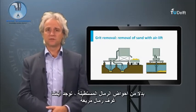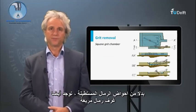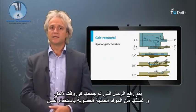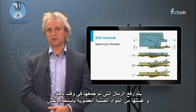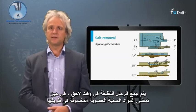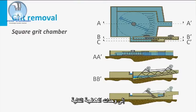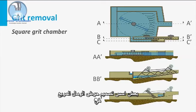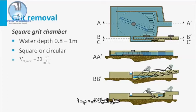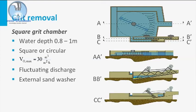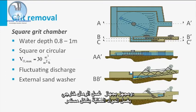Instead of rectangular grit chambers, square grit chambers are also applied. In this design, the sand is moved to one lateral side by a slowly moving hopper. The collected sand is subsequently lifted and washed from organic solids using the incoming flow. Clean sand is collected, whereas the washed organic solids proceed to the next process units. Some design features of a square grit chamber: water depth is 0.1 to 1 meter; tanks can be square or circular; maximum hydraulic surface load is 30 cubic meters per square meter per hour; the tank has a fluctuating discharge and is equipped with an external sand washer continuously washing the solids.